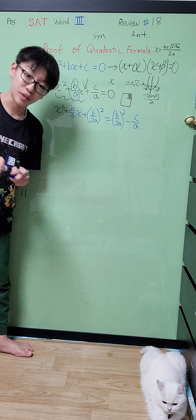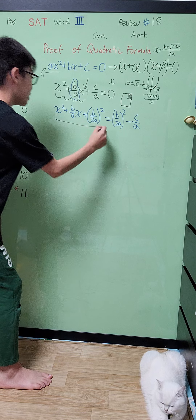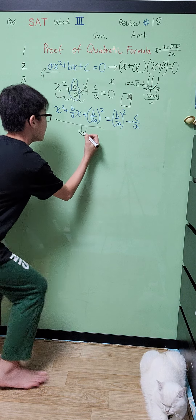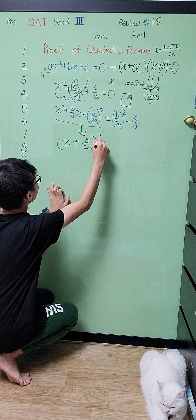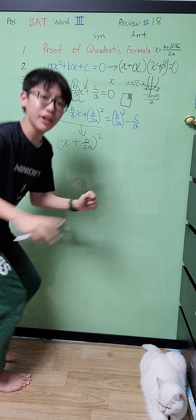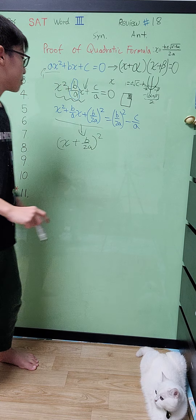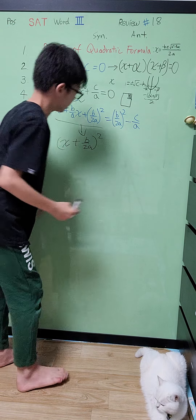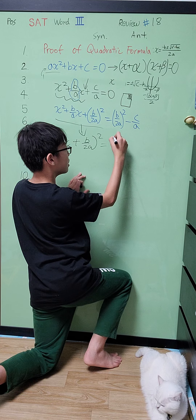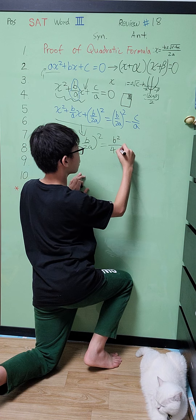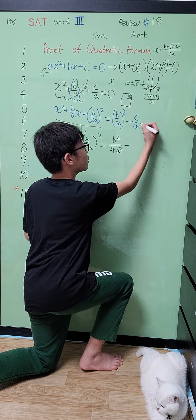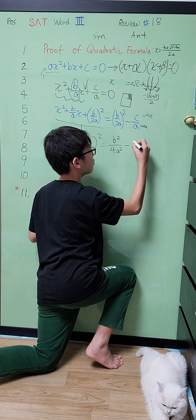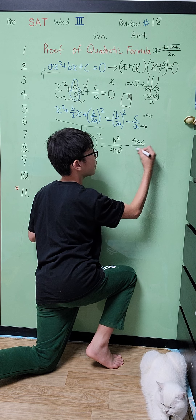You might not believe me, but all of this left side is actually the same as (x + b/2a)² — and if you try it out, it works. Now we expand the right side: we get b² divided by 4a², and then to subtract c/a we multiply top and bottom by 4a to get a common denominator, giving us minus 4ac divided by 4a².